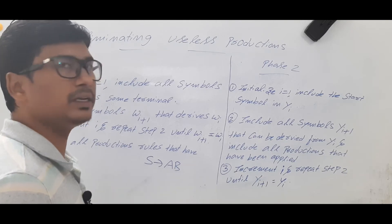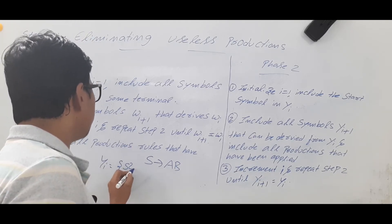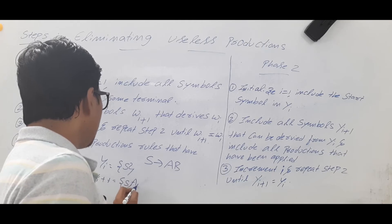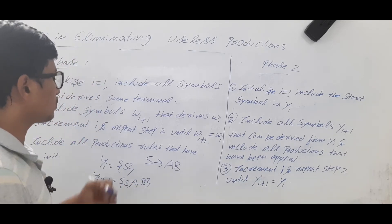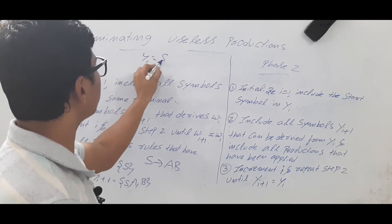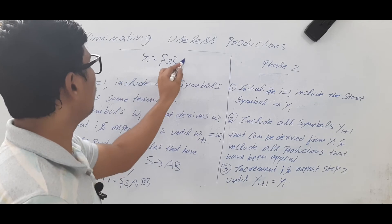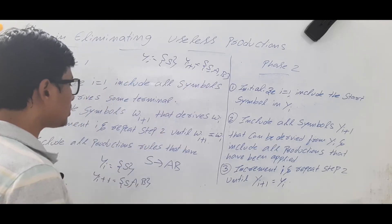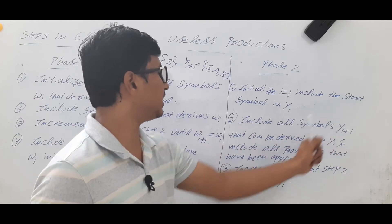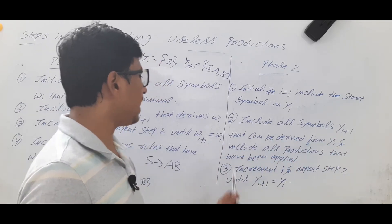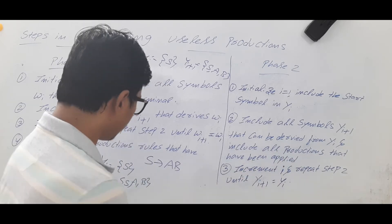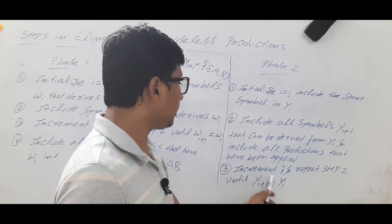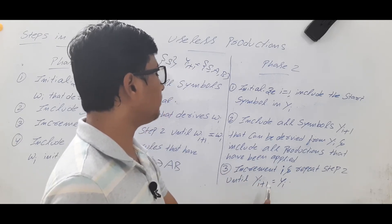For example, suppose from start symbol S, you can derive 'a' and 'b'. Your Y_i consists of only S, and Y_{i+1} consists of S, a, and b — because from the start symbol you can derive those. Include all symbols Y_{i+1} that can be derived from Y_i, and also include all productions that have been applied. From any symbol, if you can derive anything, add those as well.